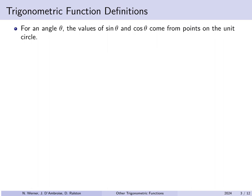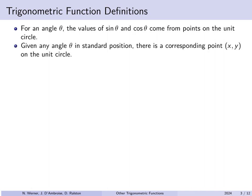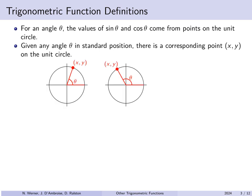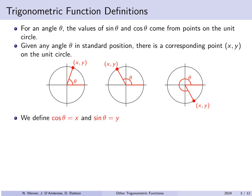Now for an angle theta, recall that the value of sine theta and cos theta come from points on the unit circle. So if you have any angle theta in standard position, there's a corresponding point on the unit circle — xy in the second quadrant, or perhaps down here in the fourth quadrant. Cosine of the angle is by definition the x-coordinate of this corresponding point on the unit circle, and the sine of theta by definition is the corresponding y-coordinate. So here they are as labeled: cos theta comma sine theta.